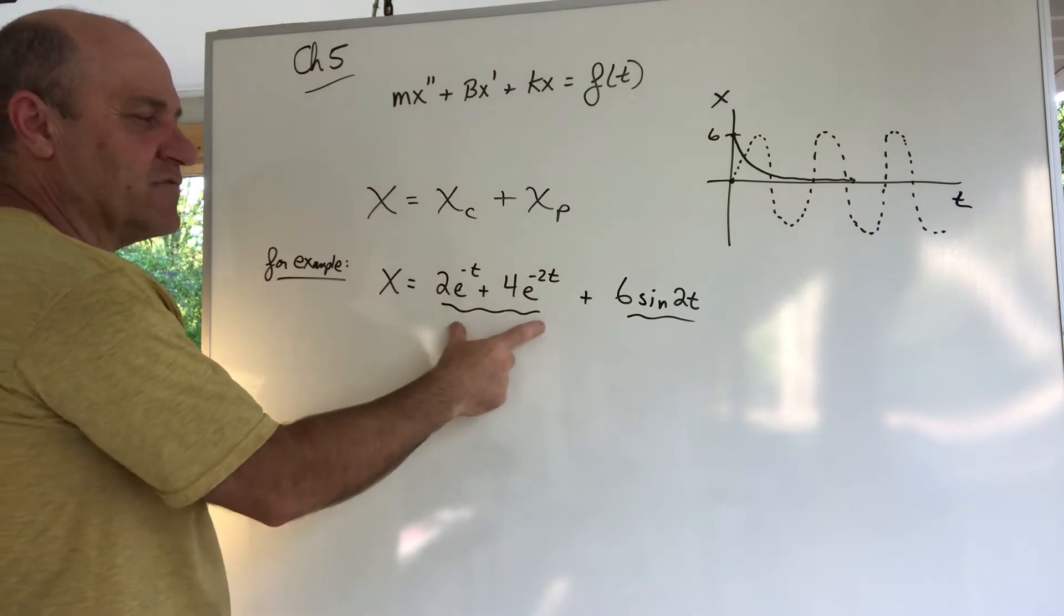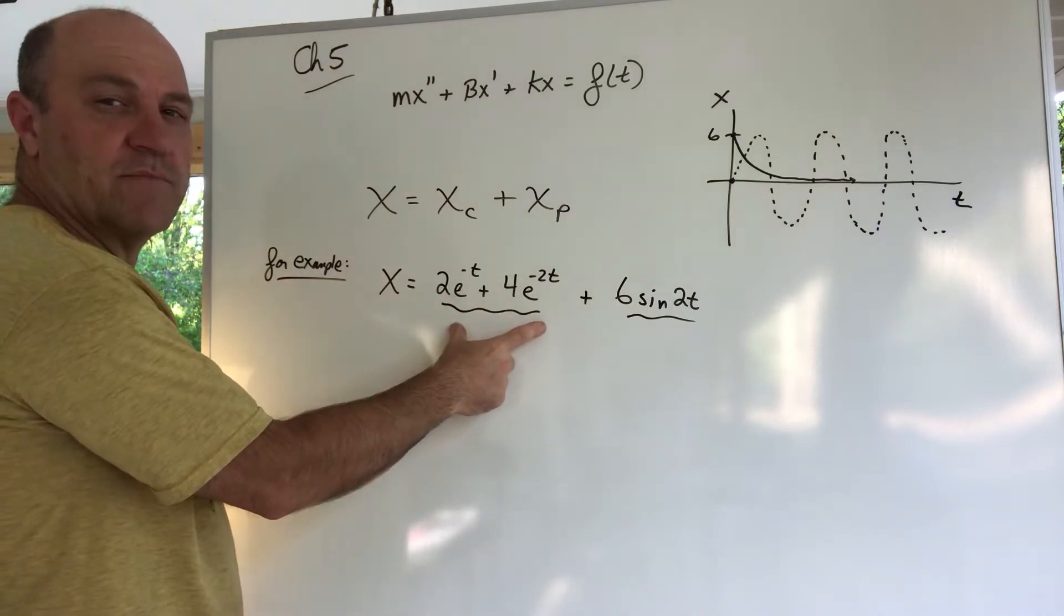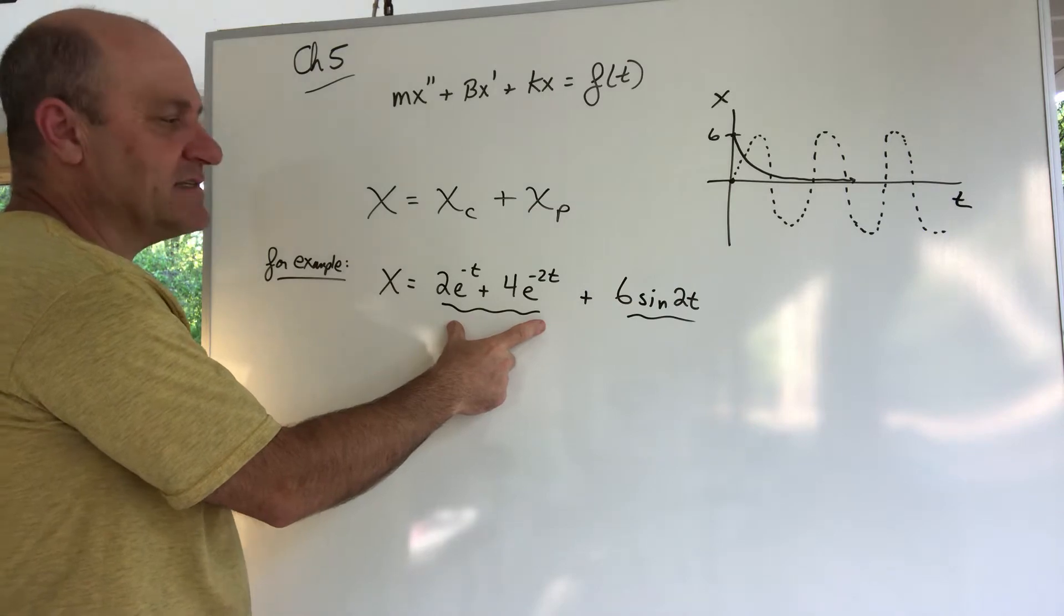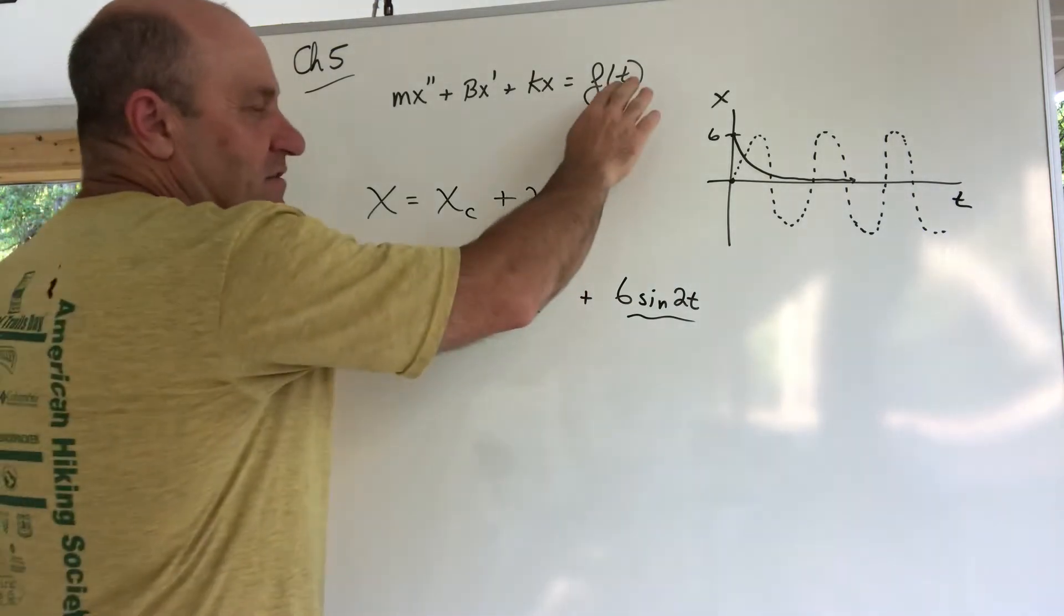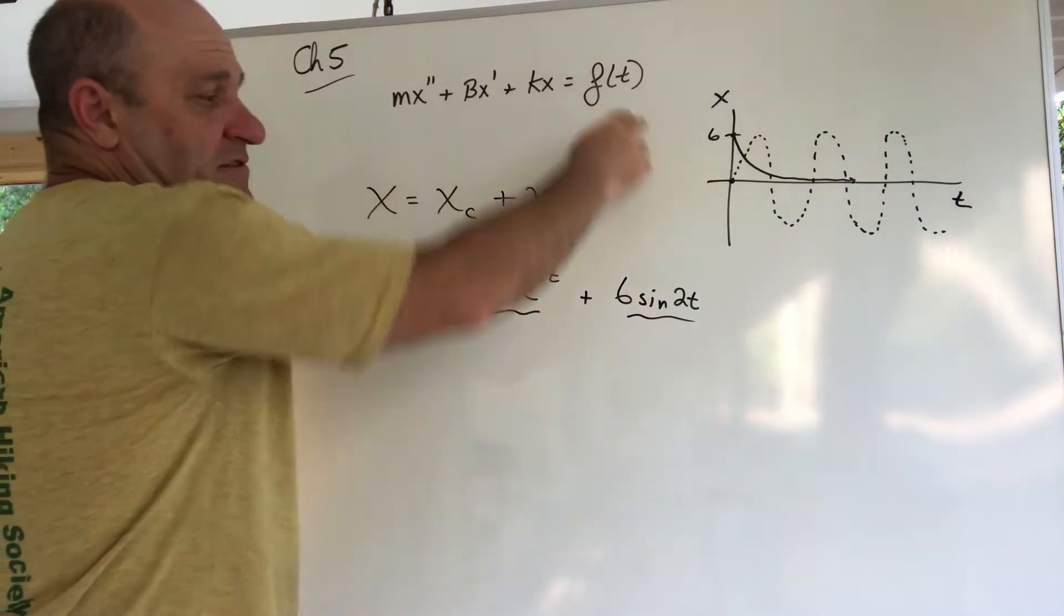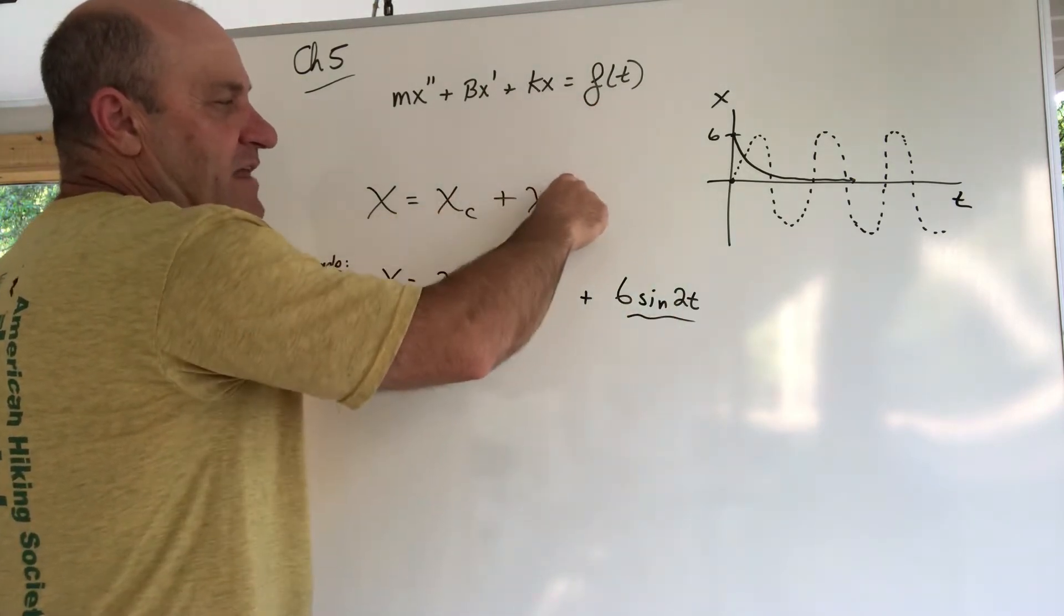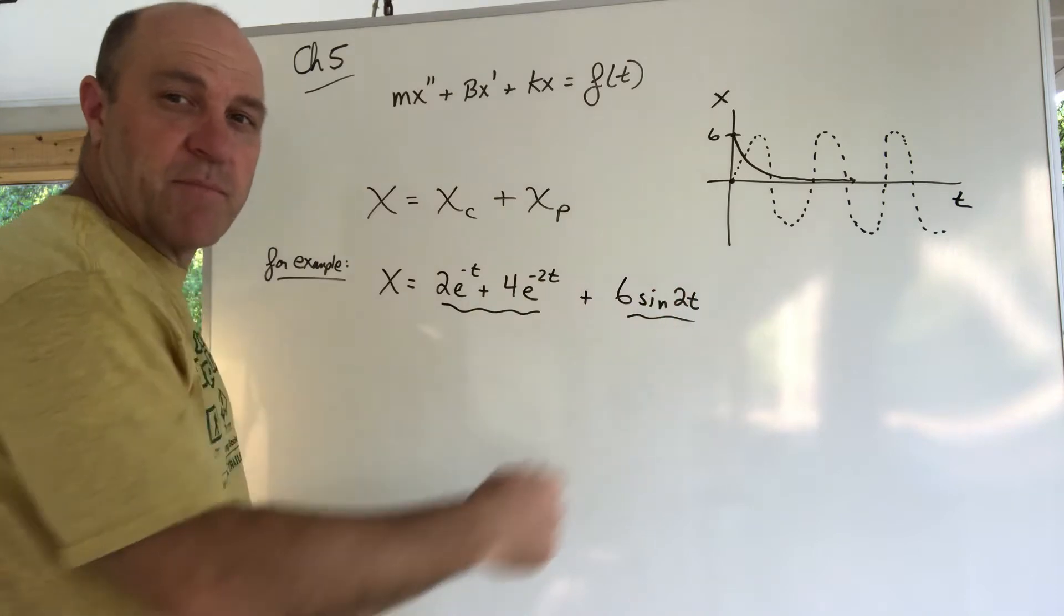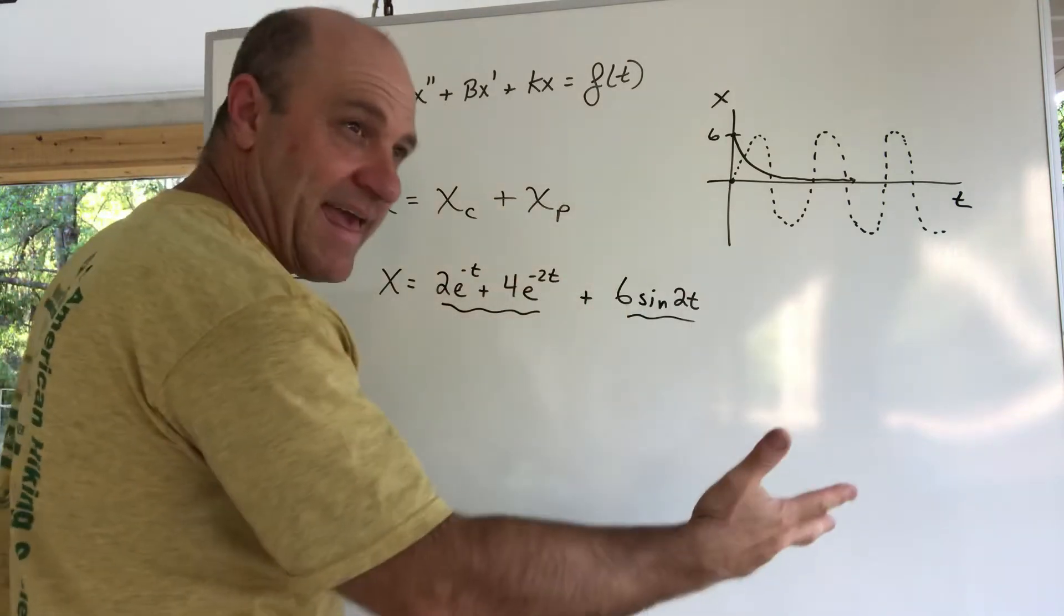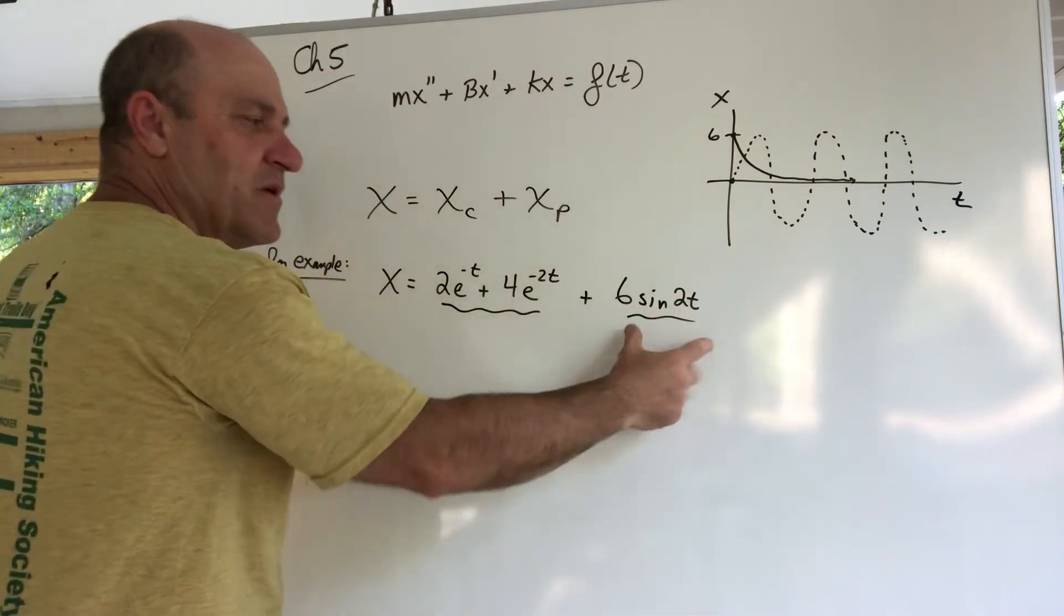For the non-homogeneous part, this is my xc. Then the driving force might have been some sine or cosine function. So I'm pretending I went and found the xp, I had to make my guess for my xp, I went and found the a and the b and ended up with my xp.